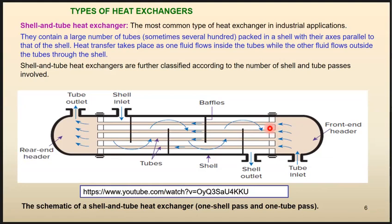Shell and tube heat exchangers can be built at a significantly large and huge scale. They contain a large number of tubes — sometimes several hundred passes — packed in a shell. The flow paths inside the shell and tubes are designed so that the arrangement can approximate counter-flow behavior, gaining the better heat transfer performance of that configuration.